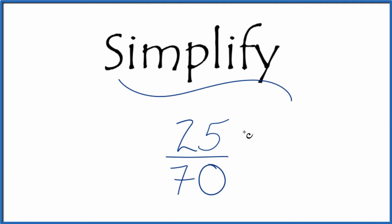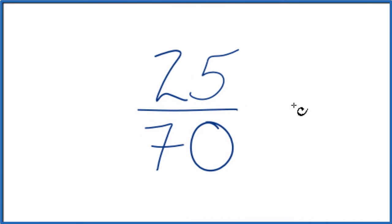Let's simplify the fraction 25/70, and here's how we do it. We want to find another fraction that's equivalent and has the same value as 25 over 70. It's just that we've simplified it to lowest terms.